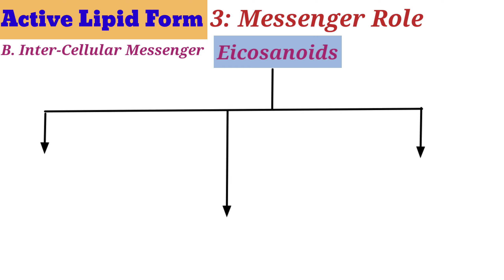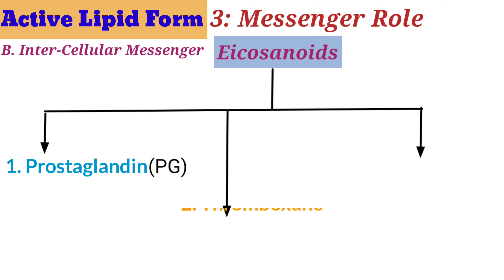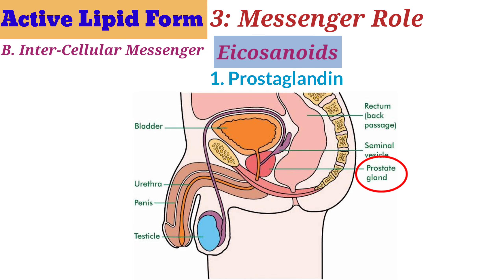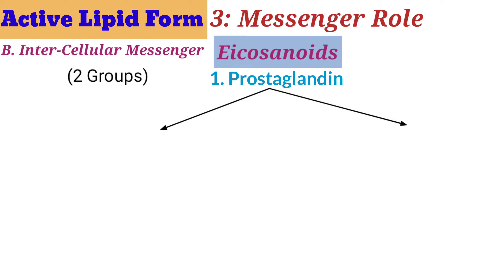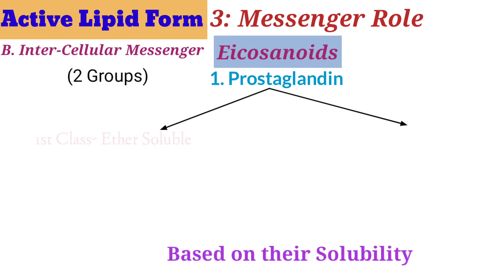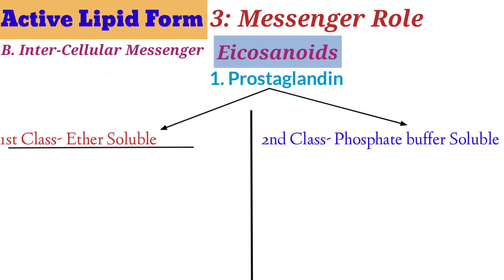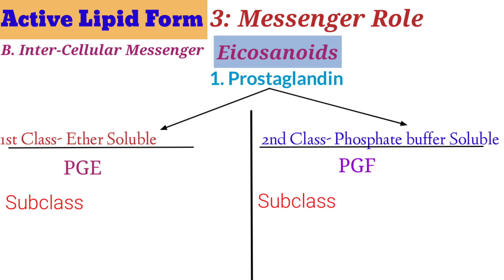Prostaglandins were first derived from the prostate gland, which is why they are named prostaglandins. There are two groups based on solubility: ether-soluble prostaglandins known as PGE, and phosphate buffer-soluble prostaglandins known as PGF. There are many subclasses such as PGE1, PGE2, PGF, PGF2, and so on.